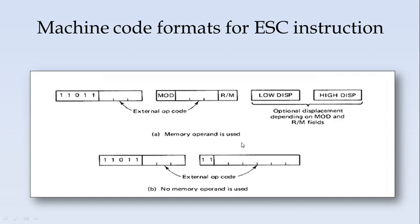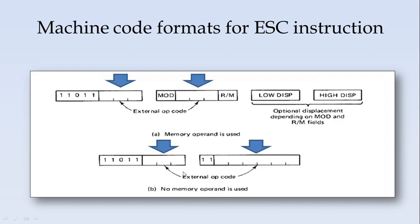For the memory operand, if there is any displacement to be indicated, the other bytes can be used for indicating the displacement. If there is no memory operation to be performed, the first byte has 1 1 0 1 1 and three bits for the external opcode, whereas the second byte has 1 1 and six bits for the external opcode — totalling nine bits, giving 2^9 = 512 different combinations for the external opcode for the coprocessor. So with a memory operand we have 3+3 = 6 bits, and without a memory operand we have 3+6 = 9 bits for the external opcode.